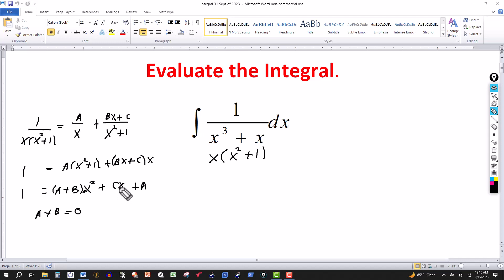I've got a linear term on the right side, C, which multiplies the x. There's no linear term on the left side, so C has to be 0.